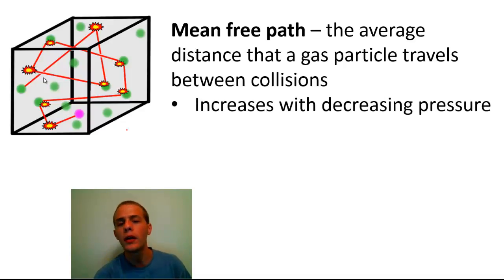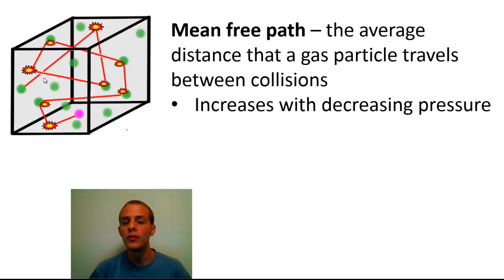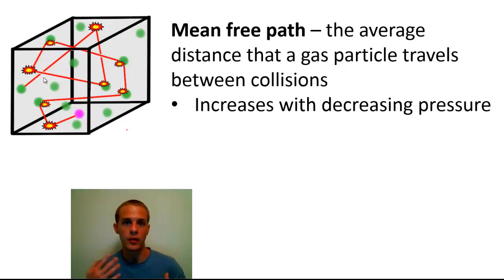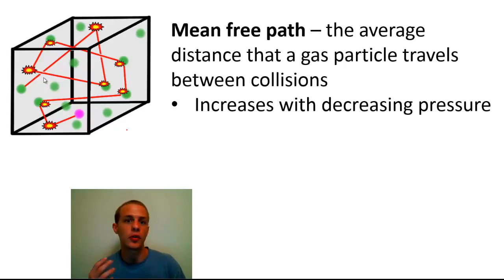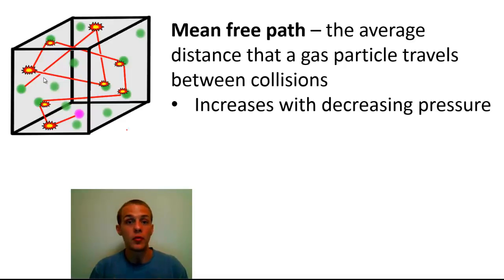One true fact about the mean free path of a gas is that mean free path increases with decreasing pressure. If you had a vacuum pump and were able to suck the air out of a flask or any vessel with a gas in it and decrease the pressure, then on average your gas particles are going to start traveling much longer distances between collisions. Decrease the pressure and mean free path increases.